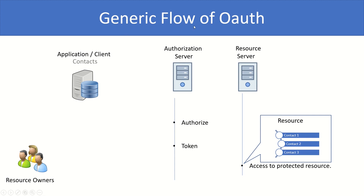The reason I said generic flow of OAuth is because you might end up working with service providers, vendors, or any Identity-as-a-Service vendor where these three endpoints might belong to the same entity — the same server may host all three. But theoretically, there should be a separate authorization server and a resource server, since these two servers have their own scope of hosting different endpoints.